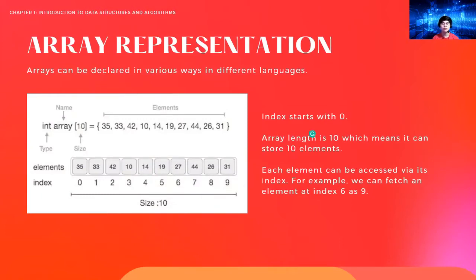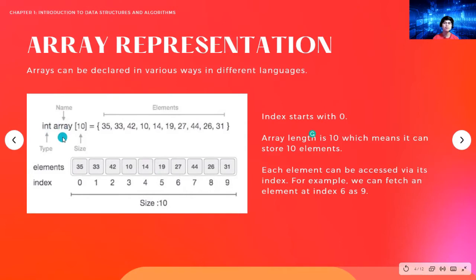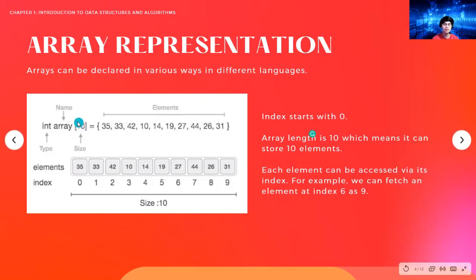For our next sample I'll be showing you how to create an array using Python. Here you can see the data type — integer — the array name, which varies depending on what you name it, the size of the array, and inside the curly braces the elements or values. The element index always starts at zero, so if the size is 10 you count from zero to nine — zero through nine is 10 values including zero.